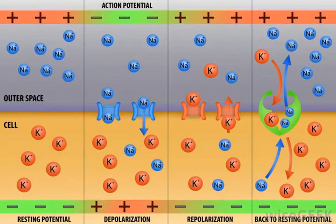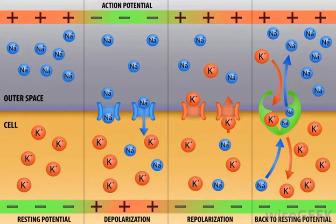Graded potentials are the weaker of the two but have the ability to generate action potentials. A graded potential is a depolarization in the resting potential because of a stimulus that is applied to only one area of a plasma membrane. This change could be caused by molecules binding to receptors, a mechanical stimulation, or a change in the charge, temperature, or permeability of the membrane.